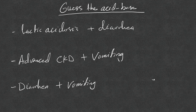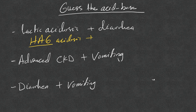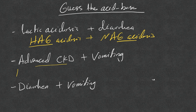Examples of mixed scenarios: lactic acidosis gives high anion gap metabolic acidosis; diarrhea gives normal anion gap acidosis from bicarb loss. Advanced CKD causes uremic acid excess — high anion gap metabolic acidosis. Vomiting is a strong stimulant of bicarb absorption, leading to metabolic alkalosis.